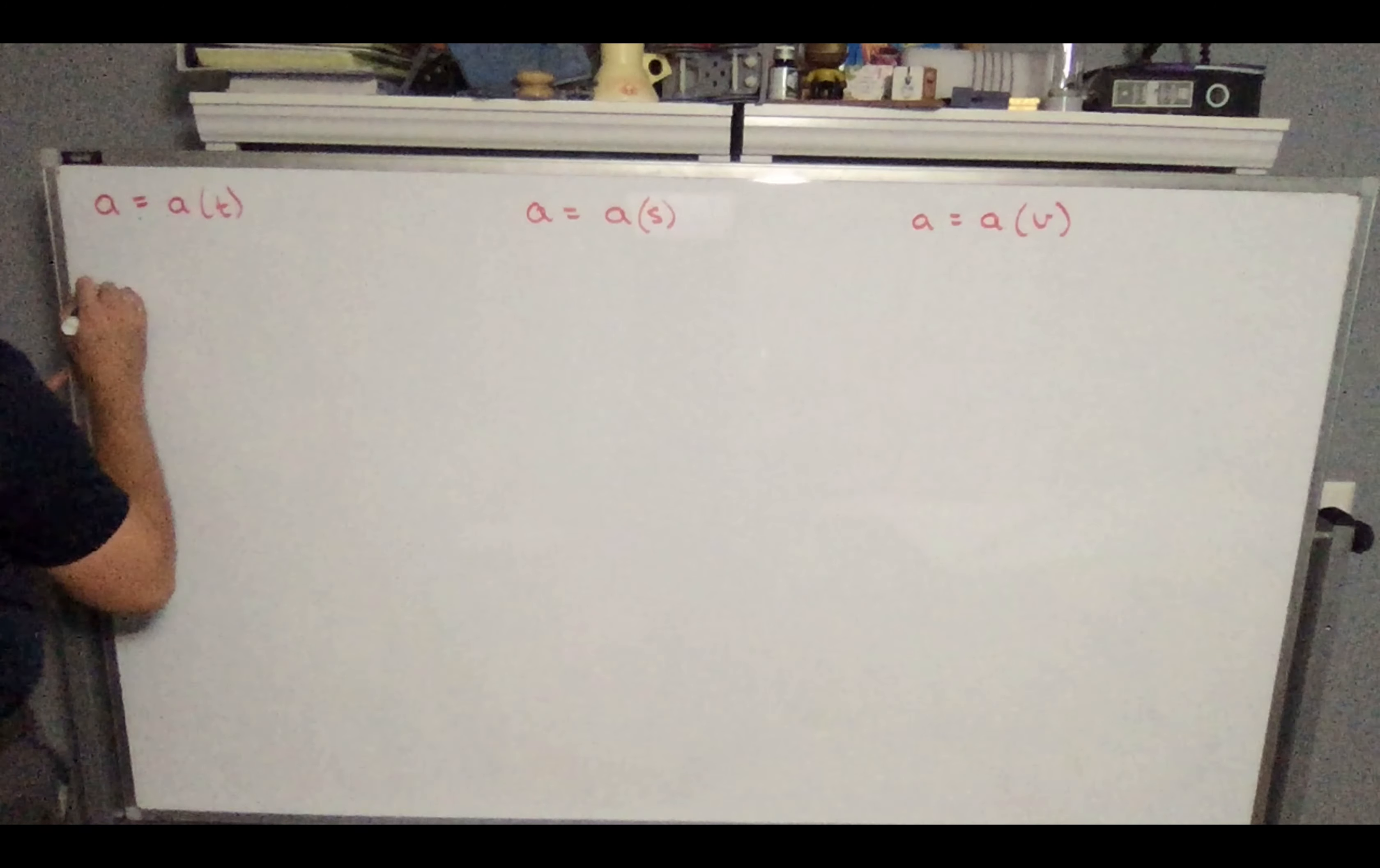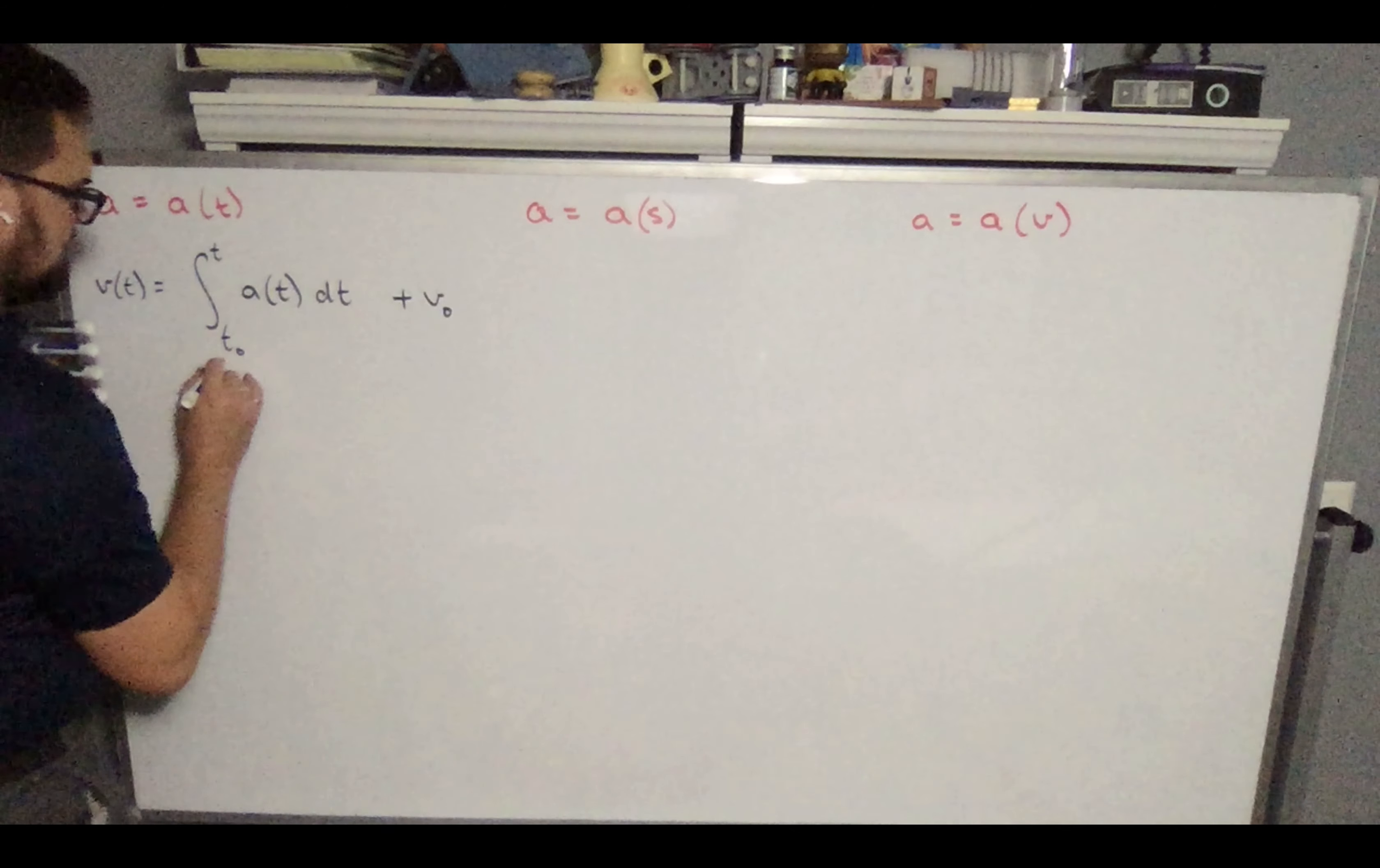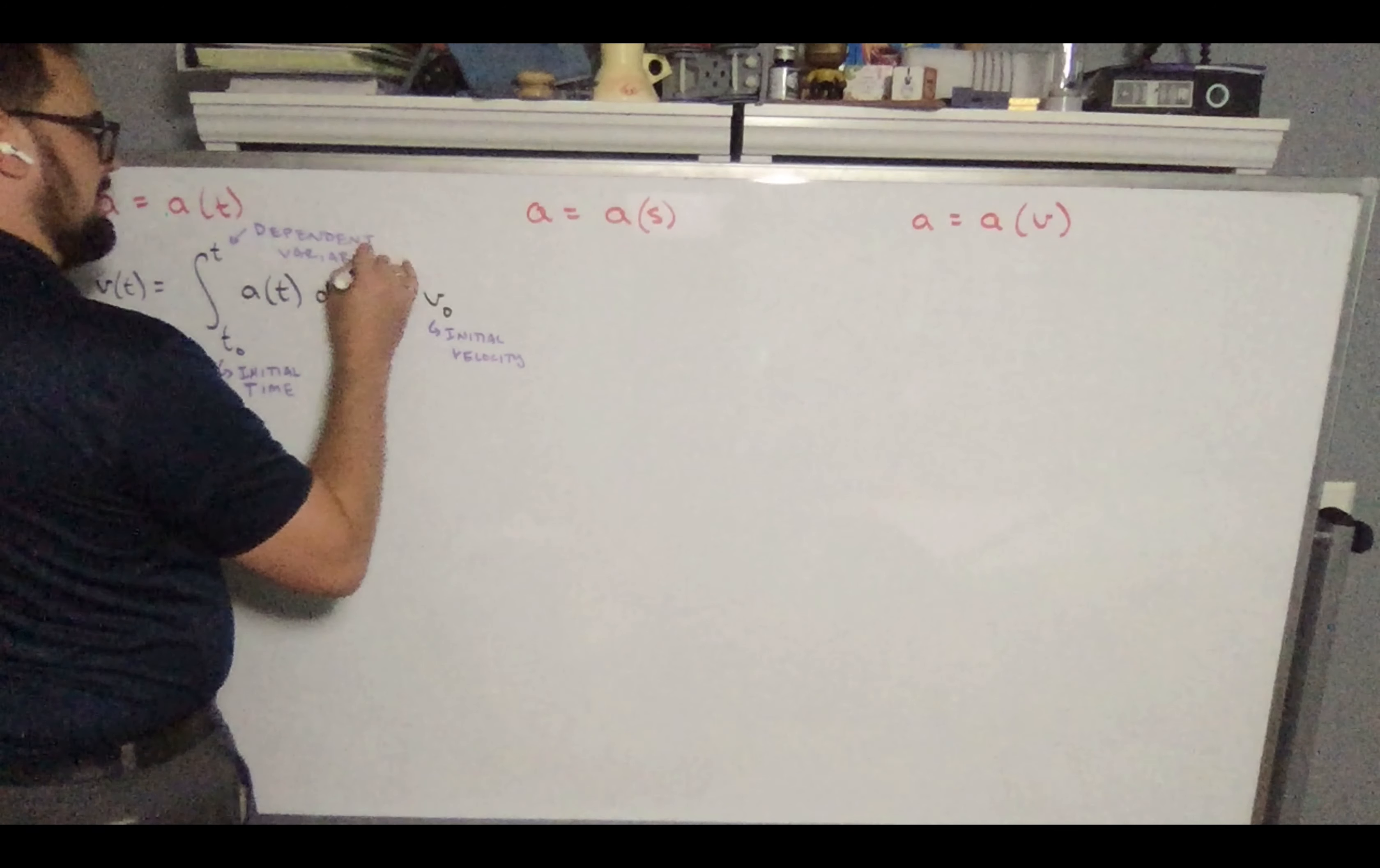Remember on our wheel of time, we said that if we had acceleration, we'd want to calculate velocity by doing the integration of acceleration with respect to time. So we'd integrate from t0 to t that acceleration dt. If we wanted to go from acceleration to velocity, we do the integration of acceleration with respect to time. And what we're doing here is we're actually explicitly laying out all those initial conditions. This is going to be my initial time.